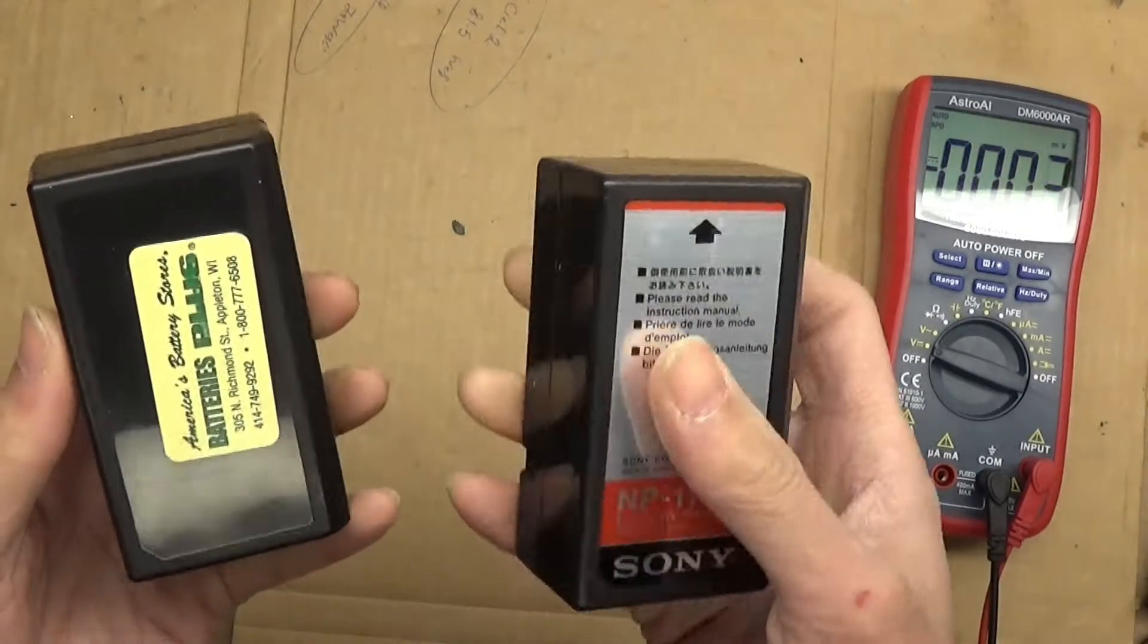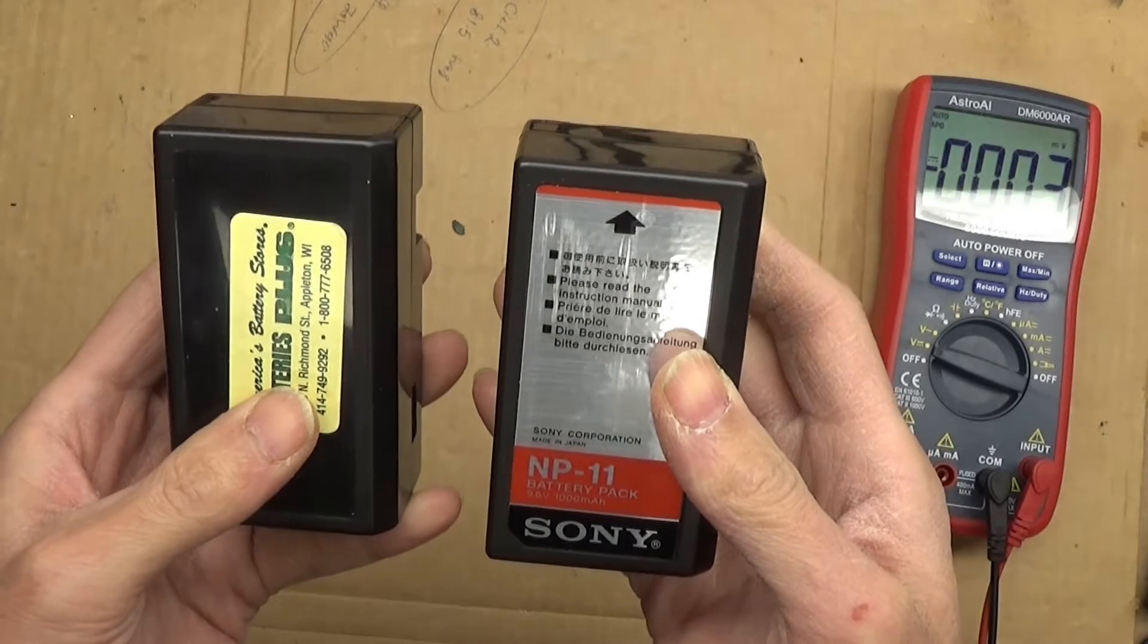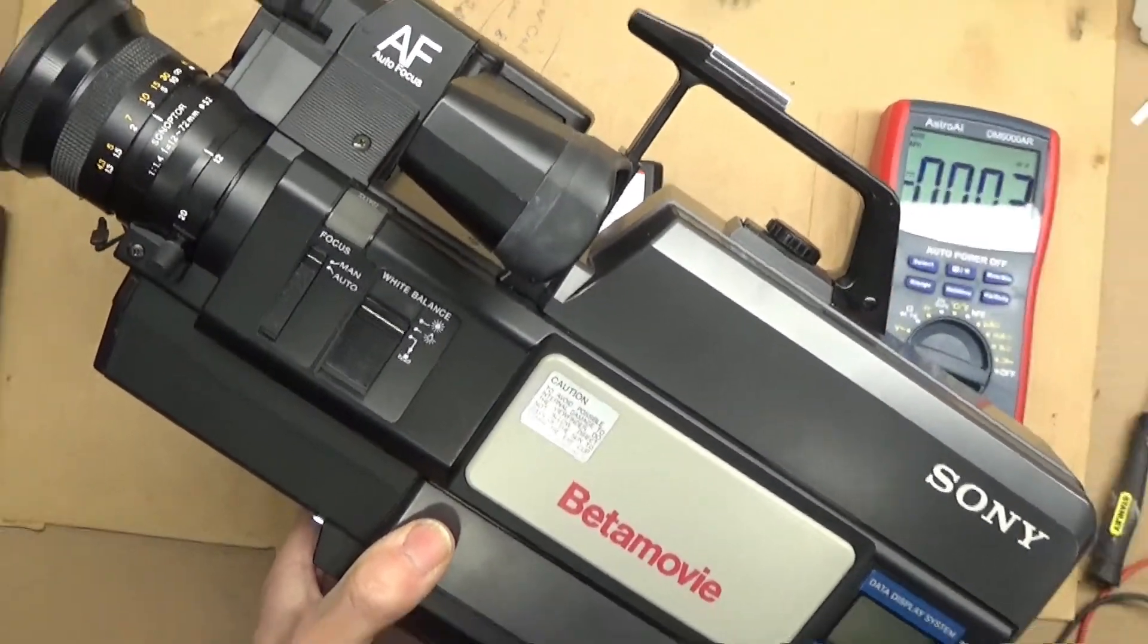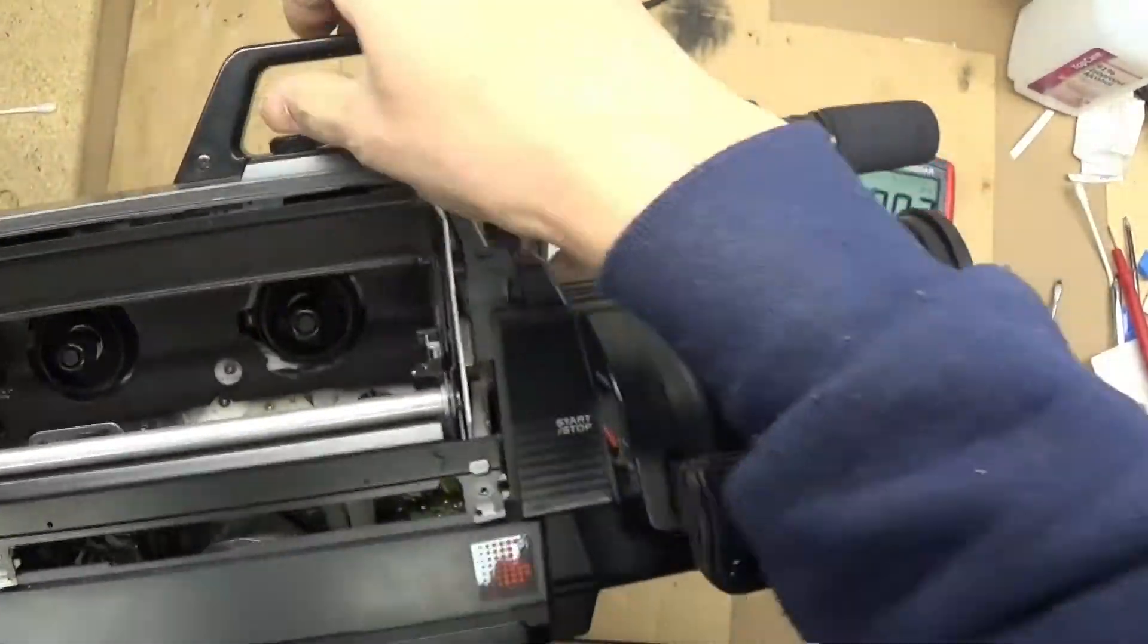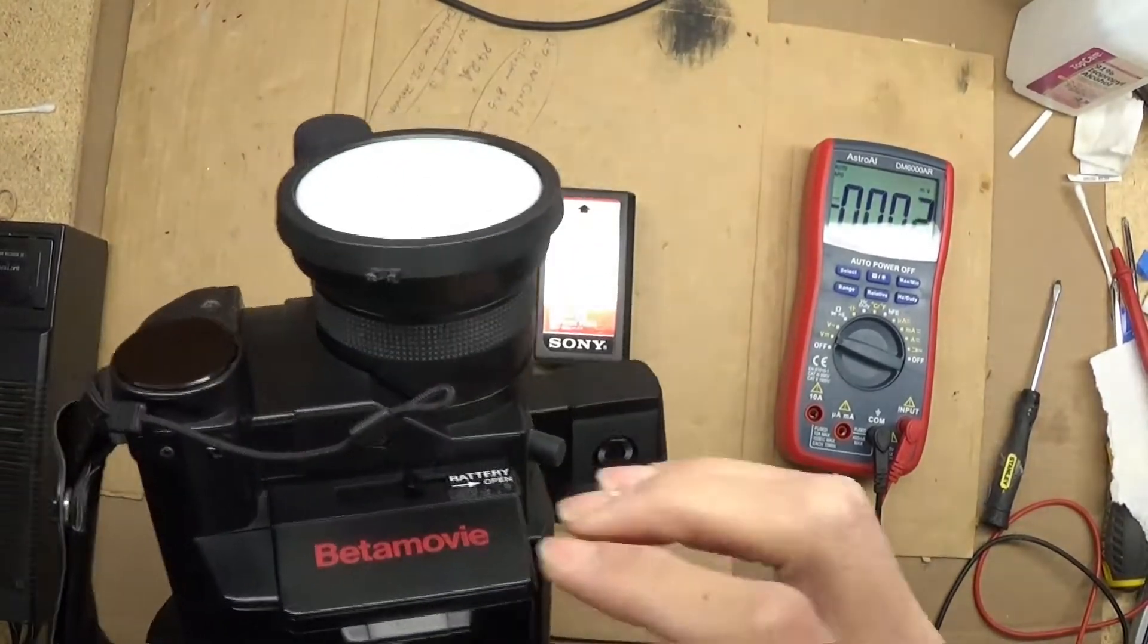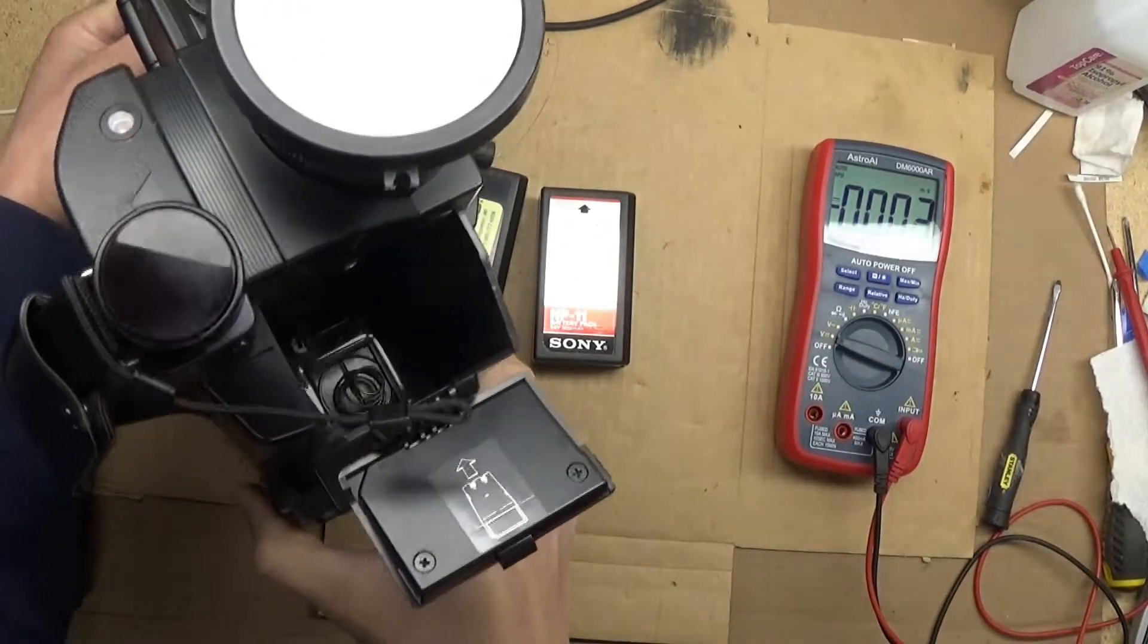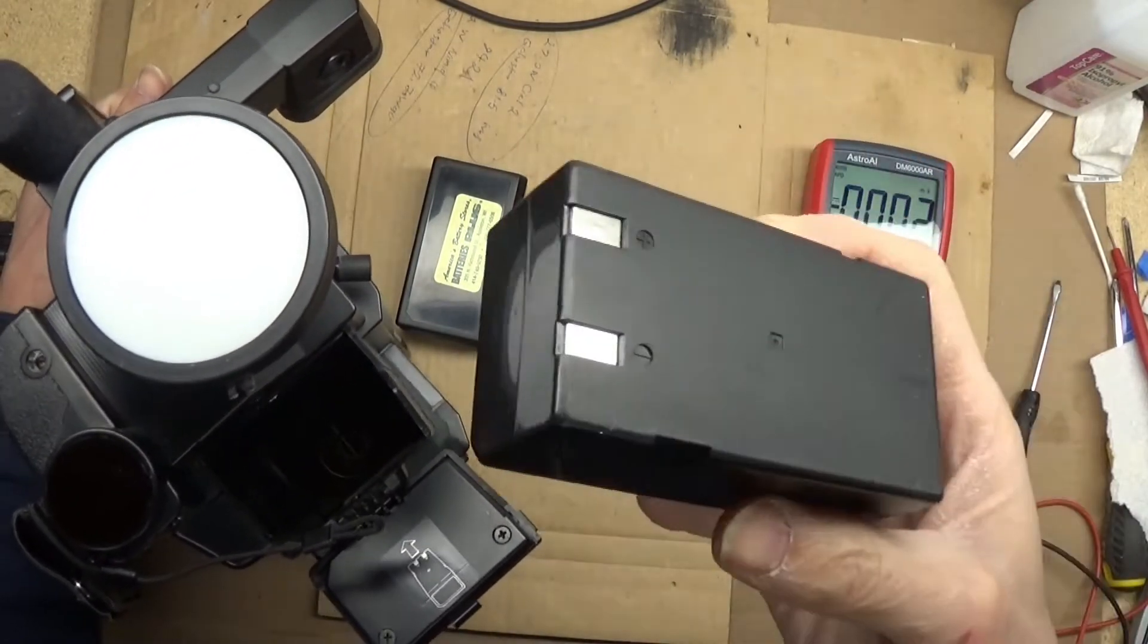Mostly this battery is used in the old Sony's beta movie camcorders. Like this one. This is where the battery goes. This side.